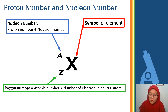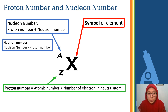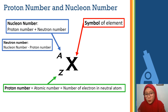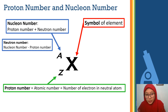That means proton number equals the number of electrons in a neutral atom. If you have been given a question and they ask you to find the neutron number, you can find it by taking the nuclear number minus the proton number. Because nuclear number is proton plus neutron number, so we can find the neutron by subtracting the proton number from the nuclear number.